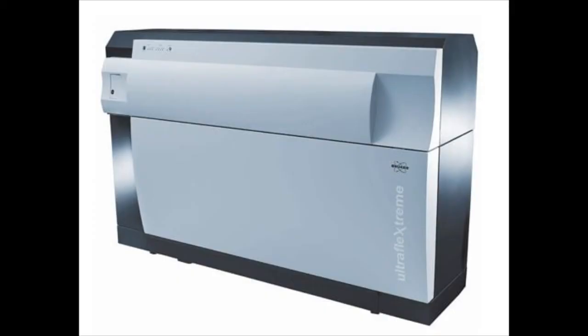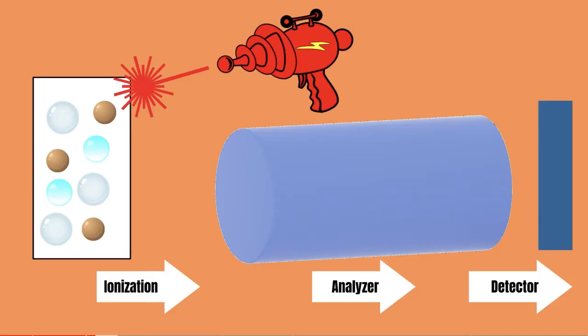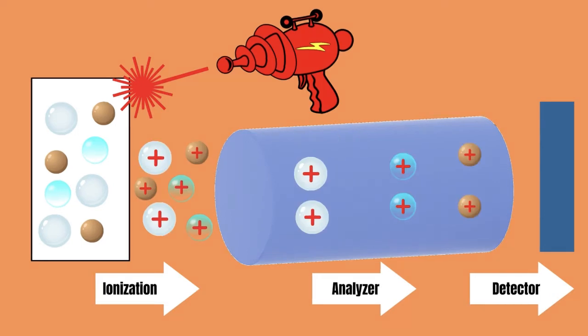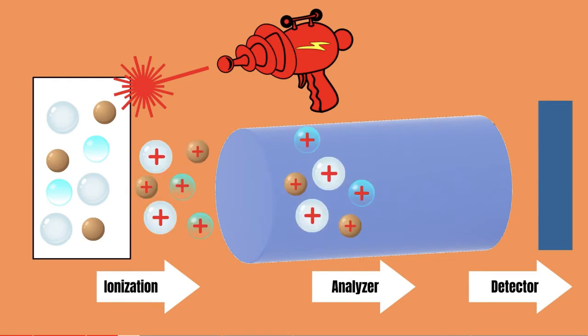Then you see it — the MALDI-TOF. The MLS reluctantly lets you watch as they load the plate in the mass spectrometer's ionization chamber. You imagine the terror of the insidious infective agent as the laser pulses tear them to shreds. You gleefully watch as the matrix buffers the sample to preserve the protein within the sample.